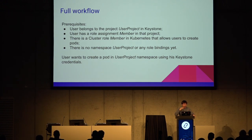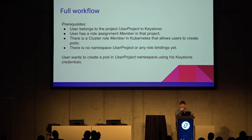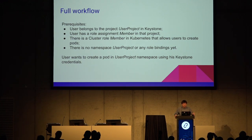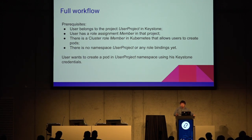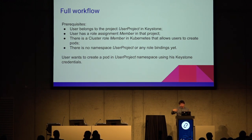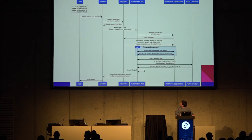To see the full picture, I created a small sequence diagram representing the workflow. It shows a user who wants to create a pod in their user-project namespace using Keystone credentials. The prerequisites are: the user belongs to the project in Keystone, the user has a role assignment 'member' in that project, and the administrator has created a cluster role in Kubernetes. Note that Keystone doesn't contain information about roles themselves — just about associations between roles and users. There is no namespace or role binding in Kubernetes yet.